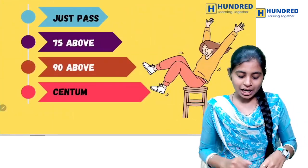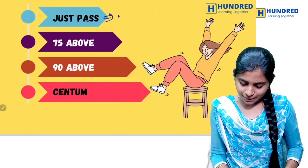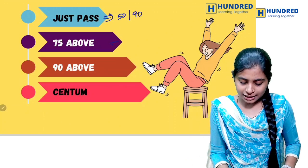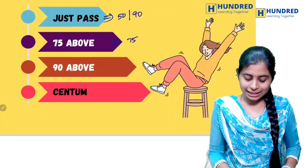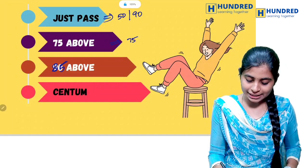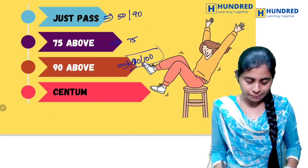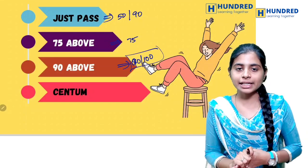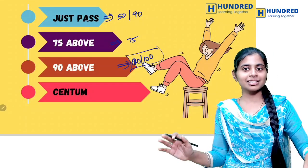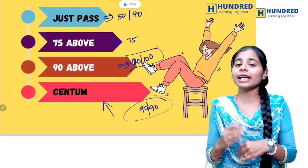So we start now. We categorize students: just pass (35+), just pass (50+), 75 above, 80 above, 85 above, and then centum — that is 90 out of 90, or 90 above. So this is how to learn and how to start based on your category.